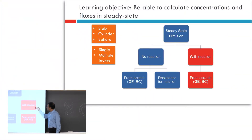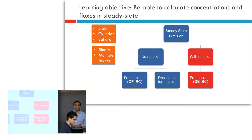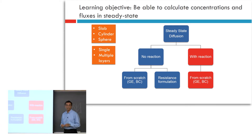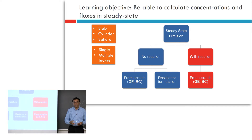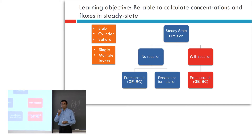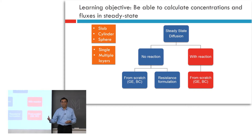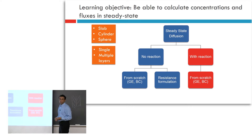Today we're going to talk about when there is a reaction present. Think of it in terms of heat transfer — this is like with heat generation. So this is like with mass generation. How does mass get generated? You have to have some reaction that generates that species. More often, we're talking about depletion — a negative generation. That's the problem we're going to do.